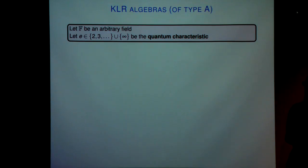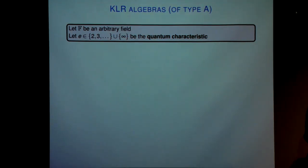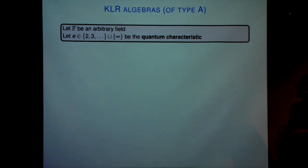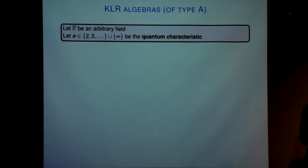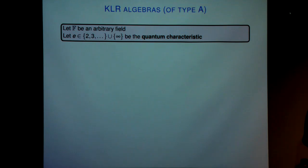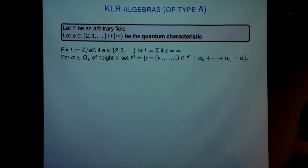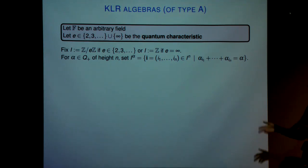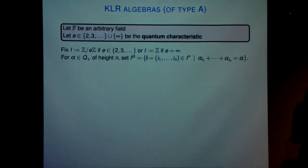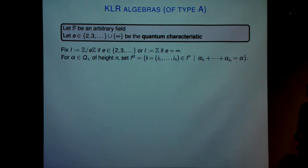I'm going to look at the KLR algebras and I'm going to be in type A. Throughout, we're going to have our parameters f arbitrary unless specified otherwise. We've got a quantum characteristic, either finite or infinite, and I'll be particularly interested in the finite quantum characteristic case. We're going to set i to be Z mod eZ for finite e. And for a positive root, we're going to define a set i-alpha to be an n-tuple of entries in Z mod eZ, such that these correspond to our simple roots.